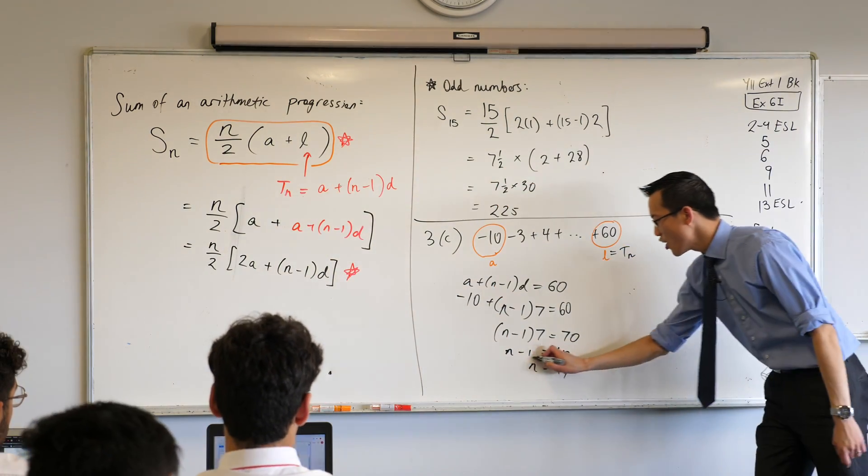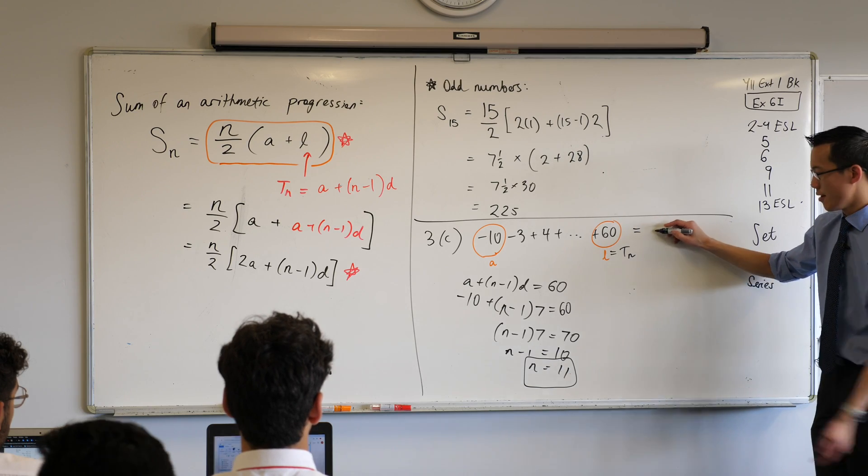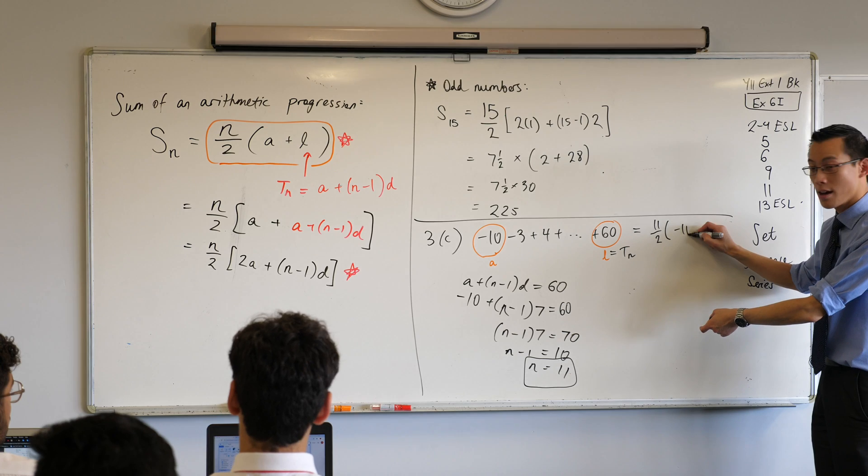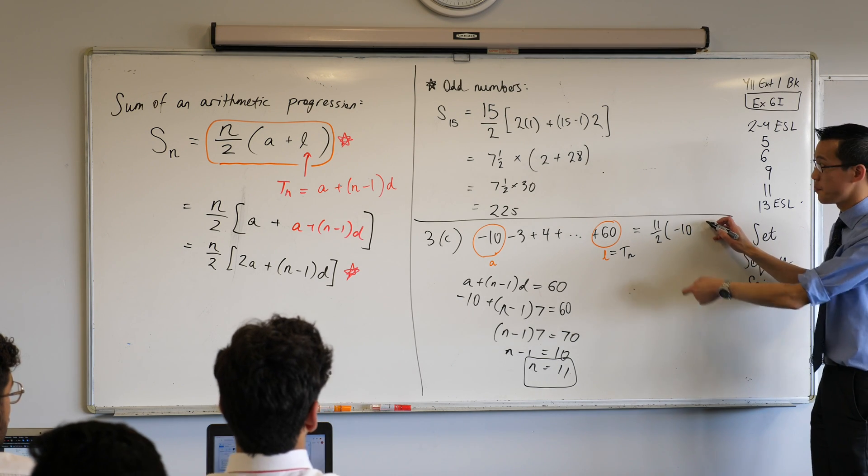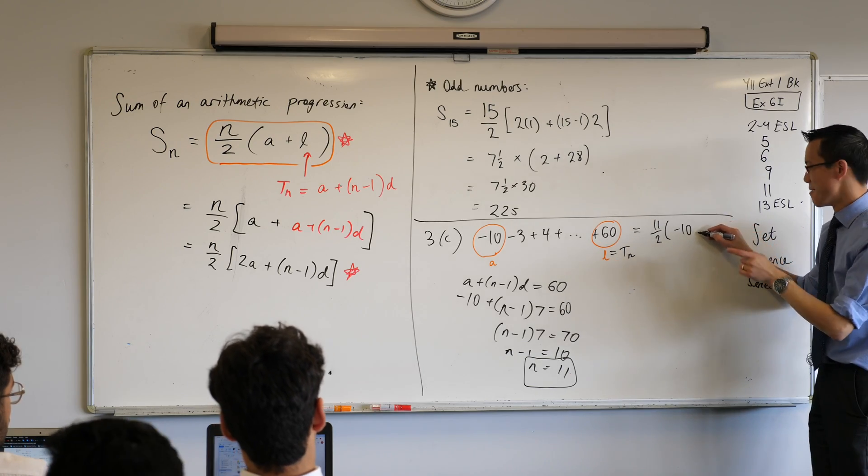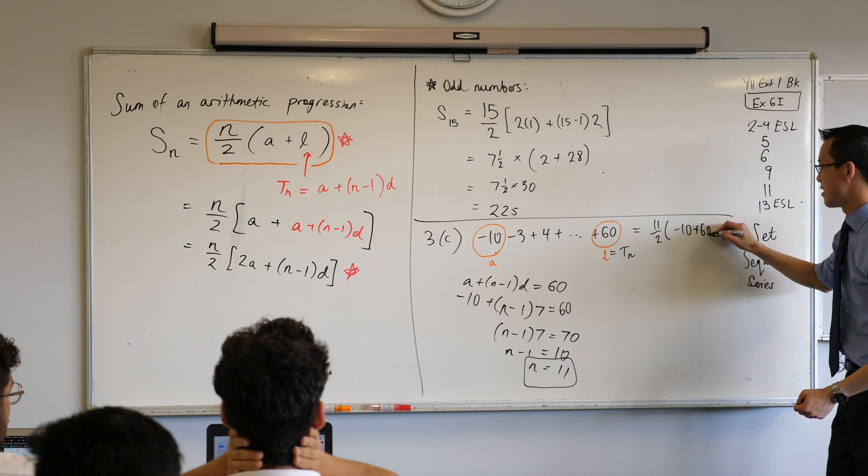So now that I know what n is, I can go straight up here and go, okay, there's my n. 11 on 2 times first term. How do I finish this? First term. Minus plus. Plus. I put together the two things to make a column, right? So that's plus 60. So there we go. 11 on 2 times.